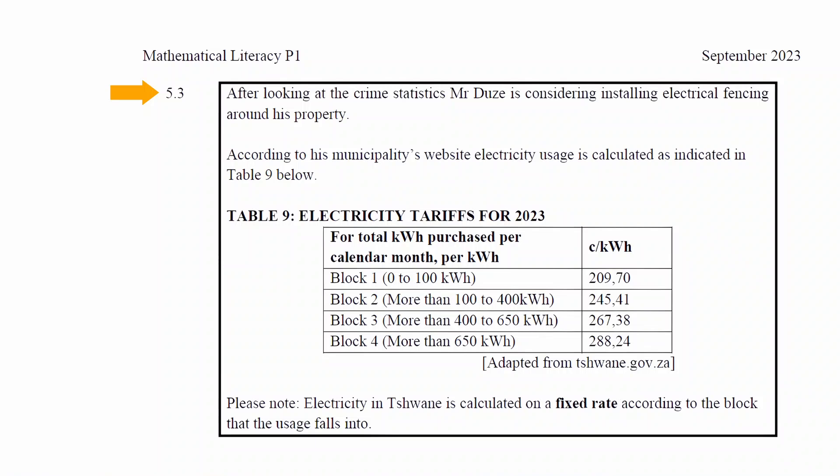Question 5.3 states that after looking at the crime statistics, Mr. Toosey is considering installing electric fencing around his property. According to his municipality website, electricity usage is calculated as indicated in Table 9.